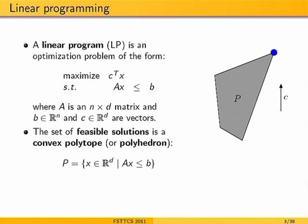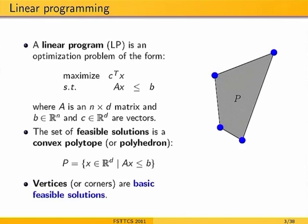A linear program is an optimization problem which has a linear objective function and a set of linear constraints. I can represent these constraints by a matrix A, where D is the dimension of the variables and A is an N by D matrix. The set of feasible solutions to this inequality forms a polytope, and there is always a vertex of this polytope which is the optimal solution.